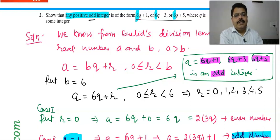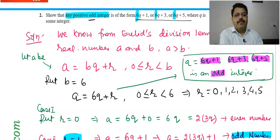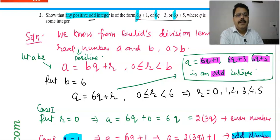So this is the proof. A can be written as 6q + 1, 6q + 3, or 6q + 5 for a positive odd integer. Let a be any positive integer — that is the starting assumption for this proof.